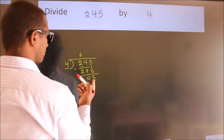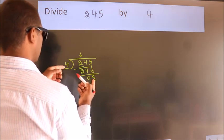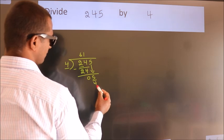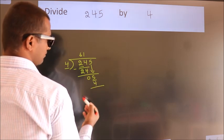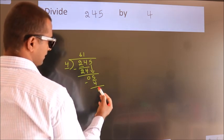A number close to 5 in 4 table is 4 once 4. Now, we subtract. We get 1.